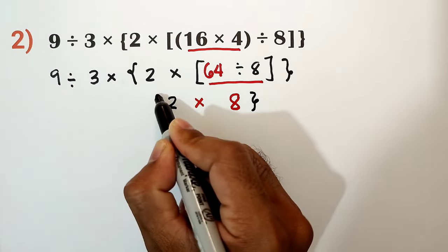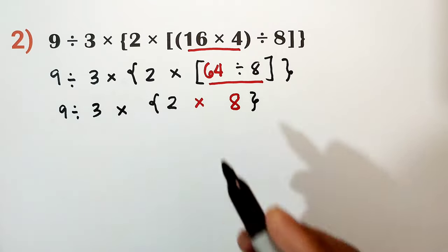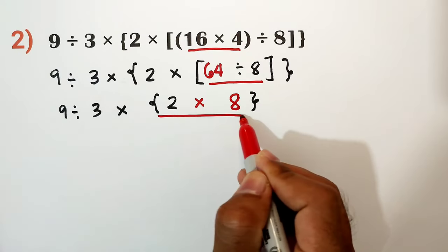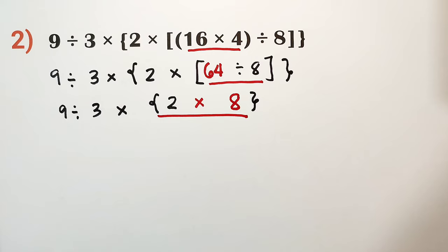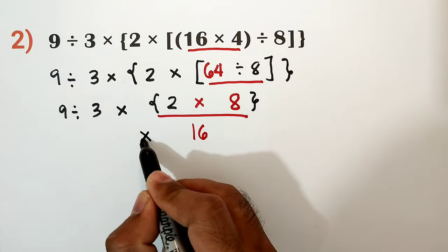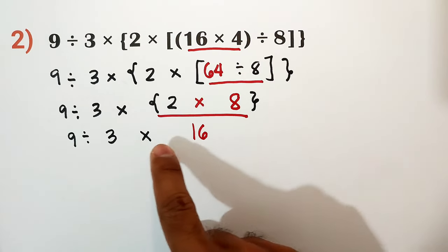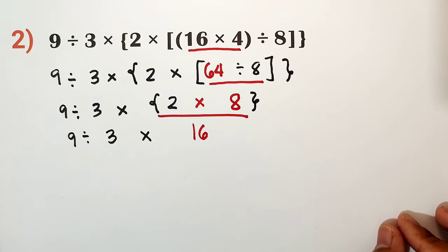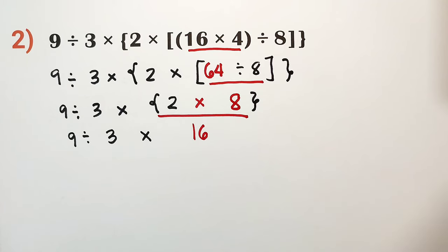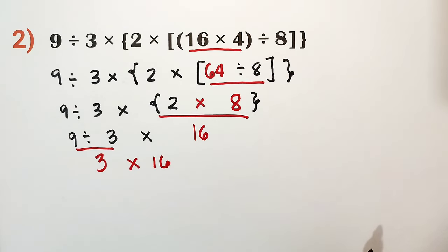What remains is inside the braces. Rewrite 9 divided by 3, then times. Simplify 2 times 8, which is equal to 16. Now in this case, we have 9 divide 3 times 16 — which operation goes first? For multiplication and division, whichever comes first from left to right. Since division comes first, we divide: 9 divided by 3 equals 3. Then multiply by 16: 3 times 16 equals 48.